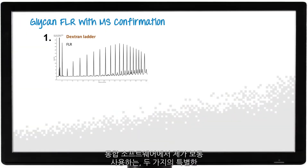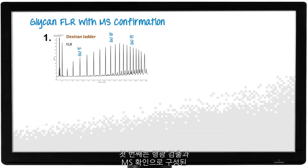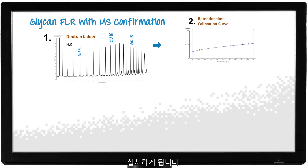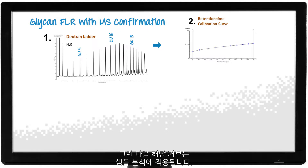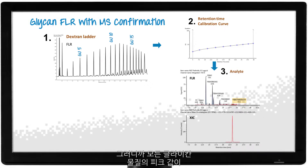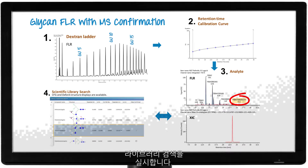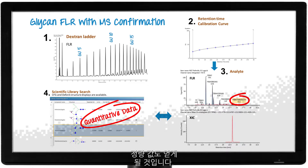There are two unique glycan workflows in unified software that I typically use. The first one is called the glycan FR with MS confirmation. It utilizes the scientific library. First, you will perform a retention time calibration using a dextran ladder. The calibrated retention time for each dextran ladder will generate a curve, which is then applied to your analyte of interest. Every single glycan peak will have a calibrated retention time based on this curve and an accurate mass measurement from the mass spectrometry data. You can combine those two pieces of information, followed by a scientific library search to get the identification assignment. In addition, each glycan will get a quantitative value from the fluorescence signal as well.